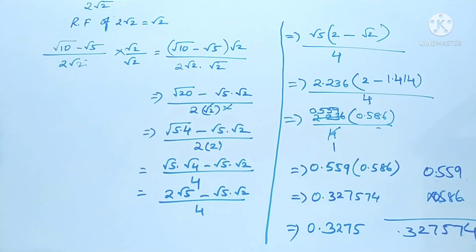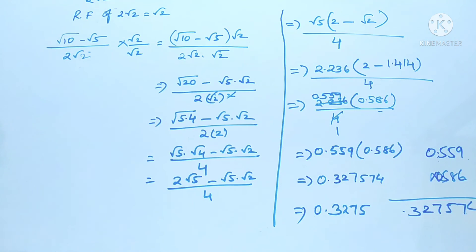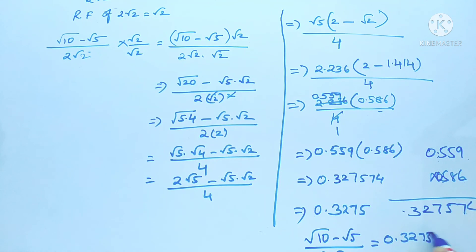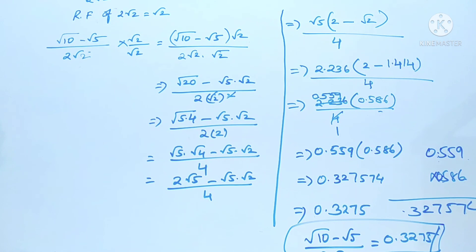So finally, (√10 - √5) / (2√2) = 0.327. That is how we solve this problem. Please like this video, share it with your friends, and please subscribe to my channel. Thank you for watching.